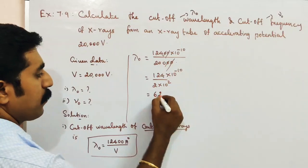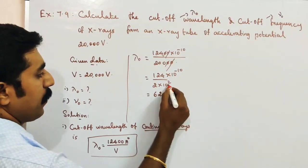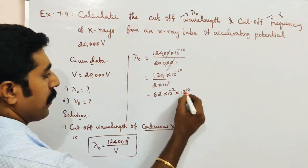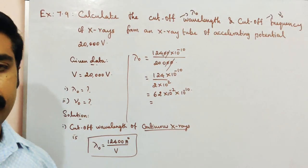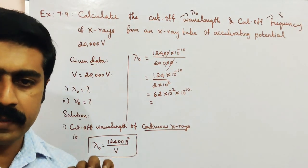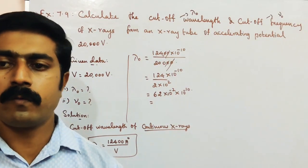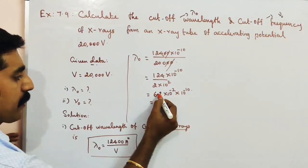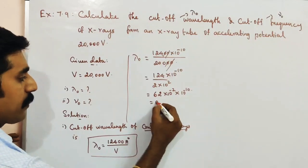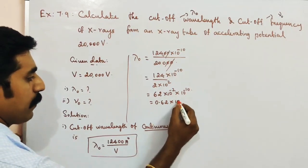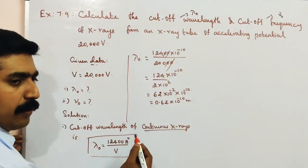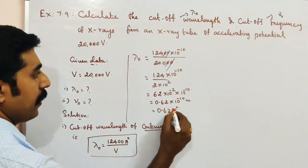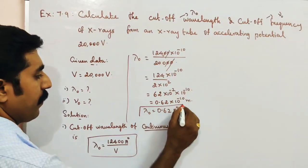Simplifying: 6,200 / 10⁴ = 0.62. Combining with 10⁻¹⁰ m: the result is 0.62 × 10⁻¹⁰ m, which is nothing but 0.62 Ångströms. So this is the cutoff wavelength of continuous X-rays.